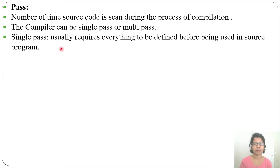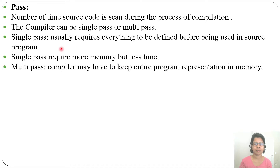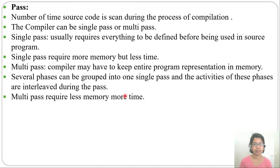A single pass compiler usually requires everything to be defined before being used in the source program. Single pass requires more memory but less time. A multi-pass compiler may have to keep the entire program representation in memory as it repeatedly reads from memory. Several phases can be grouped into one single pass, with the activity of these phases interleaved during the pass. Multi-pass requires less memory but more time.